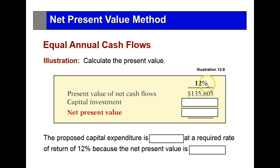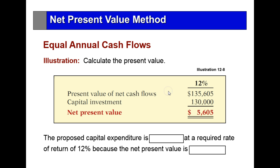The present value of net cash flows — which we got at $135,000 — minus what the capital investment is going to be gives us our net present value. The expenditure is acceptable because the net present value is zero or greater than zero.